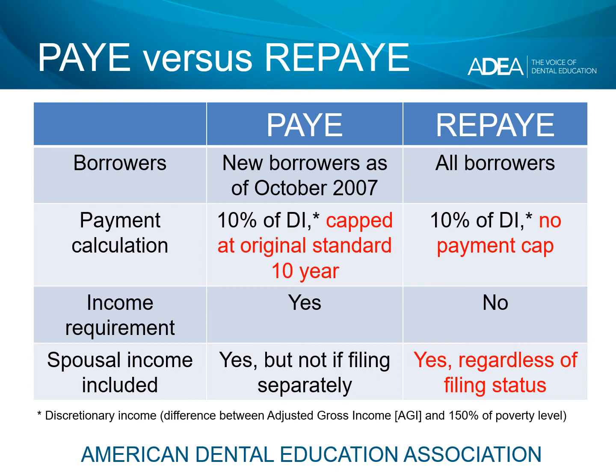Now let's look at spousal income. This is very important for married borrowers or those of you who are single thinking about getting married. Under all the income plans, certainly including PAY and REPAY, spousal income is counted for married borrowers who file a joint return.